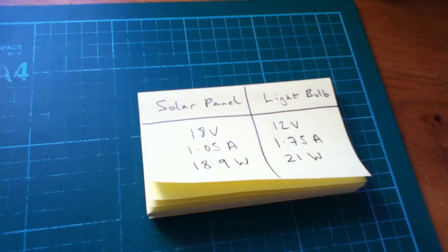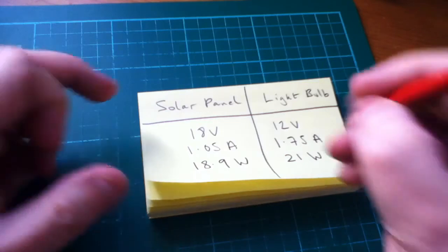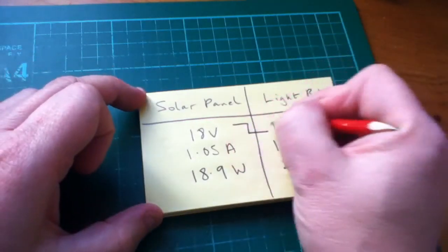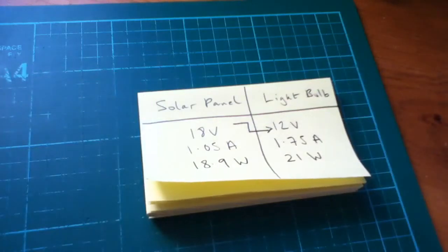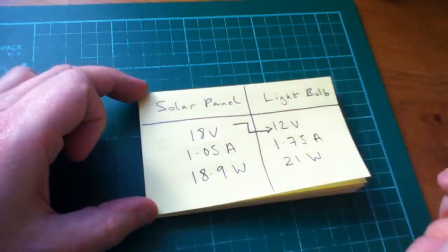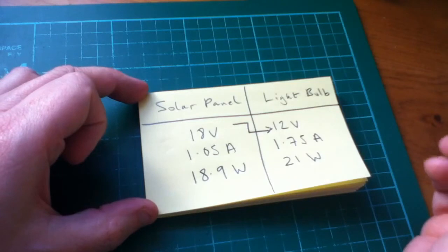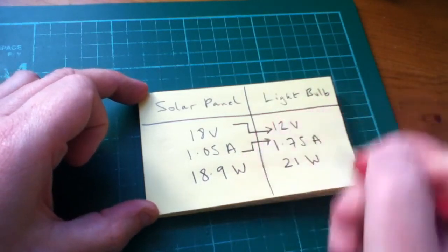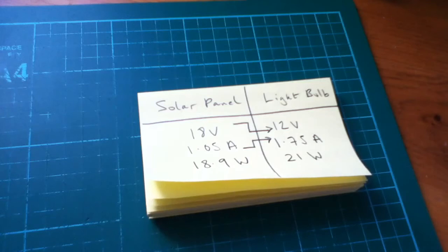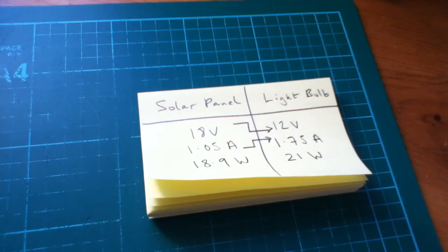So, you can see that in order to get the solar panel to operate at its working power, its maximum power, we'd need to take 18 volts on the solar panel and step it down to 12 volts. But, at the same time, we'd need to take about an amp, just over an amp, 1.05 amps, and step it up to 1.75 amps. So, we need a converter. We need something that's going to transform voltage down and transform current up.